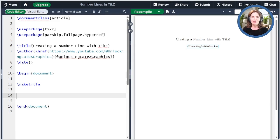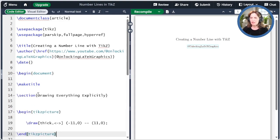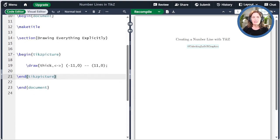All right, so I'm going to go ahead and draw a number line. Today, I'm going to make it from minus 10 to 10 with ticks at every integer. So let me go ahead and paste some code here. This is creating a TikZ picture environment, which is our drawing canvas, and then it's going to draw a line from minus 11 to positive 11. I'm giving a little extra space at each end. Let me go ahead and compile that.